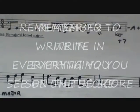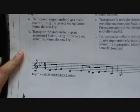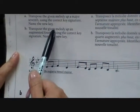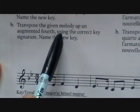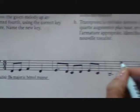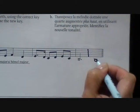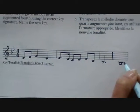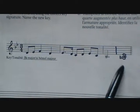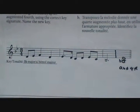Now we're going to go to question B. So we've blown this up to make it a little easier to see. The question is: transpose the given melody up an augmented fourth, using the correct key signature, and name the new key. So again, let's use this as an interval question first. It's B flat. They want an augmented fourth, so 1, 2, 3, 4. We need to make that interval an augmented fourth.